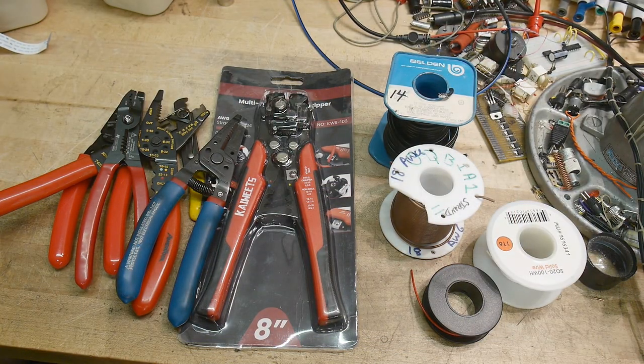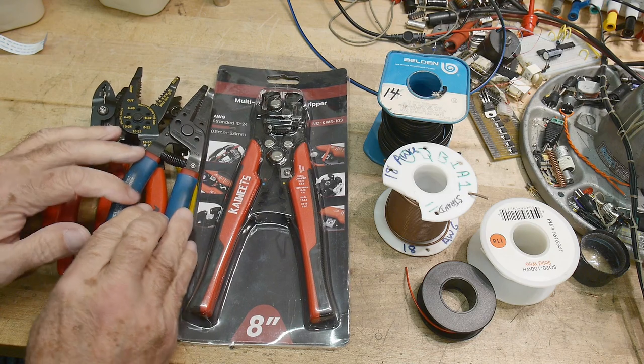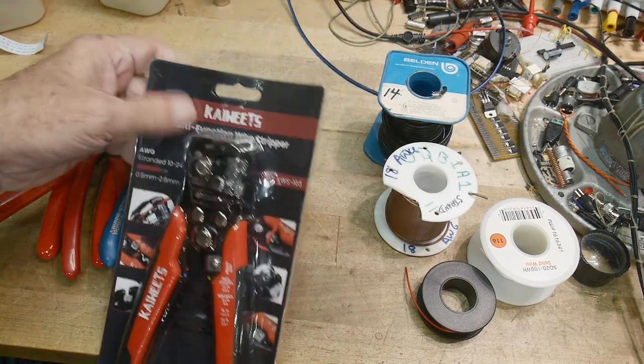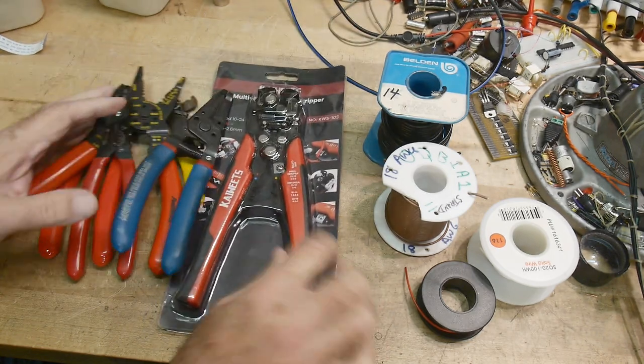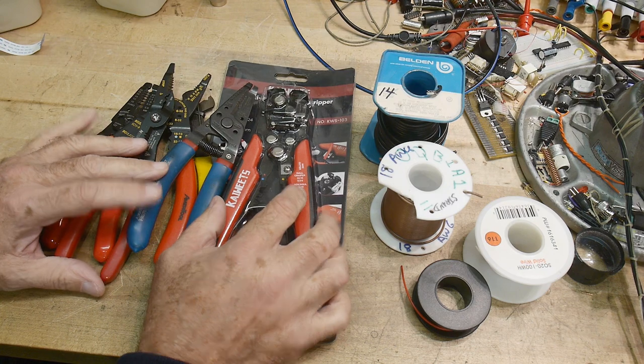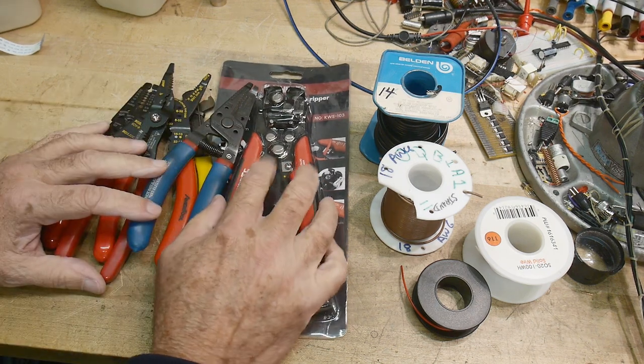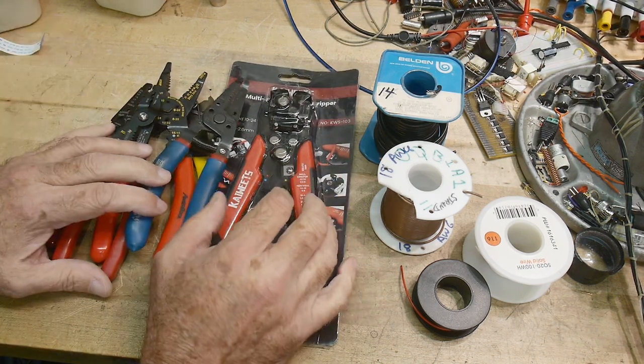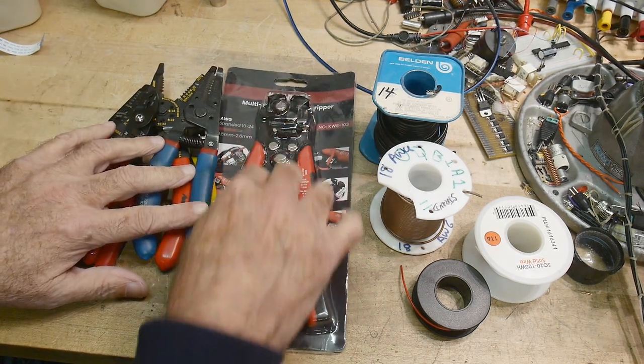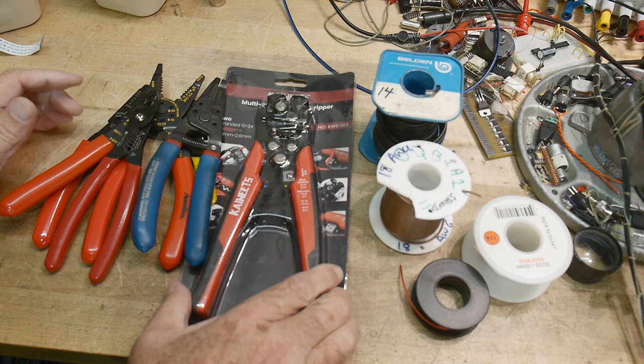Okay, this video is going to be about wire strippers. The reason I'm doing the video is I got these in the mail today. So these were sent to me by Kai Wheats, and I didn't know they were coming. I think I gave them a list of some of the products they had that I would potentially be interested in, and this is one of them. I've been wanting to get a pair of wire strippers like these.